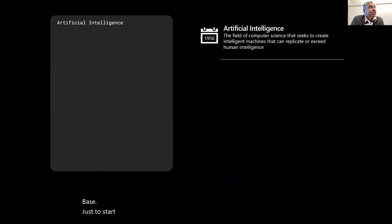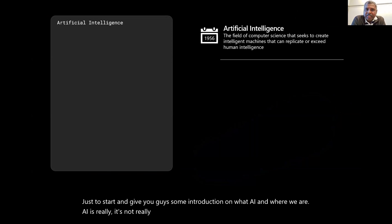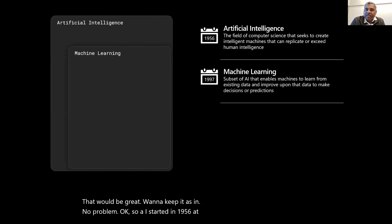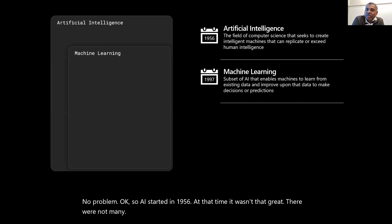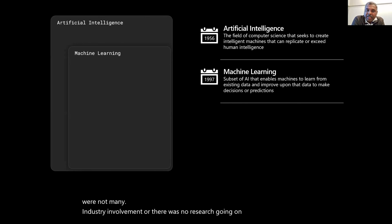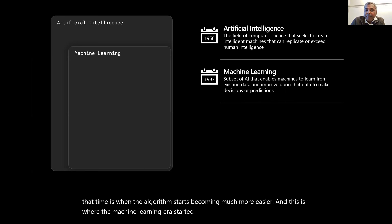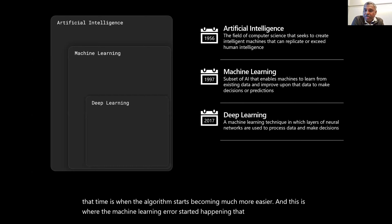Just to give you some introduction on where we are with AI — it's not really new. It has been in the industry for a long time. AI started in 1956. At that time, it wasn't that great; there was no major research going on. But in 1997, algorithms started becoming much easier, and this is where the machine learning era started happening.